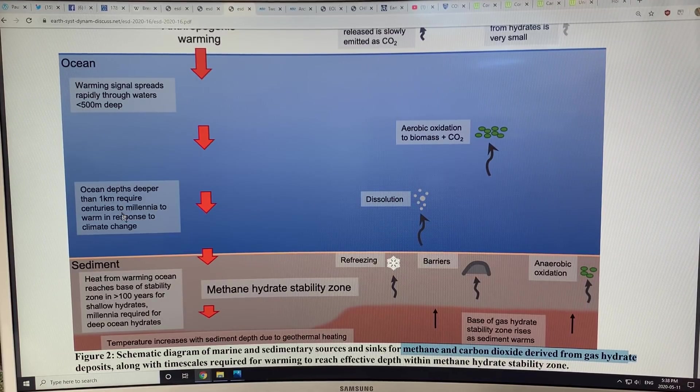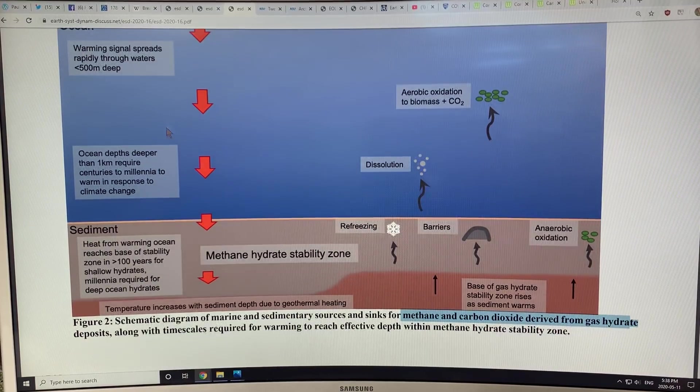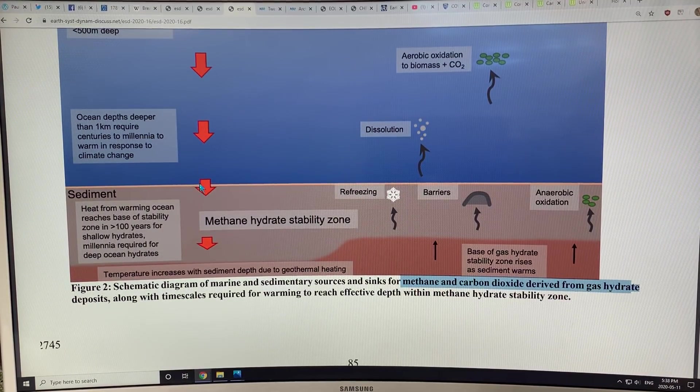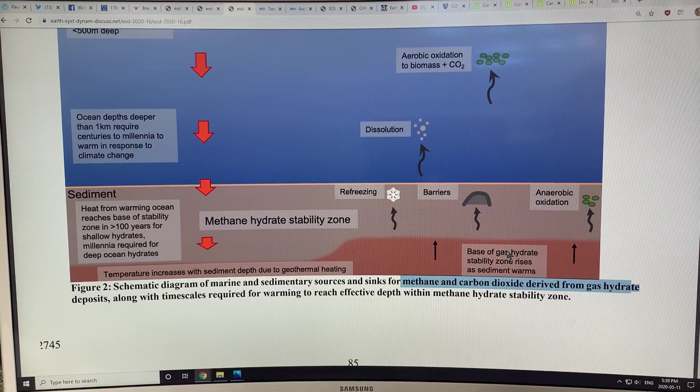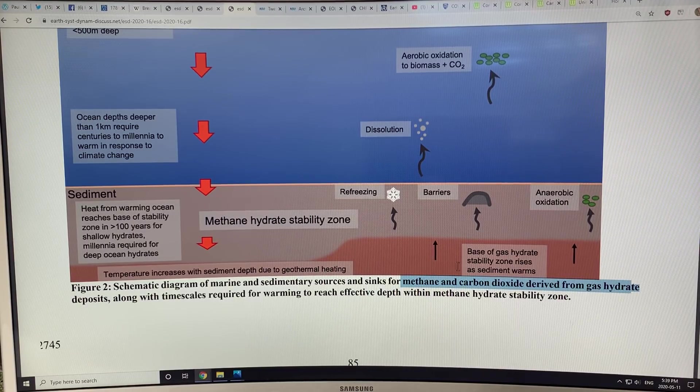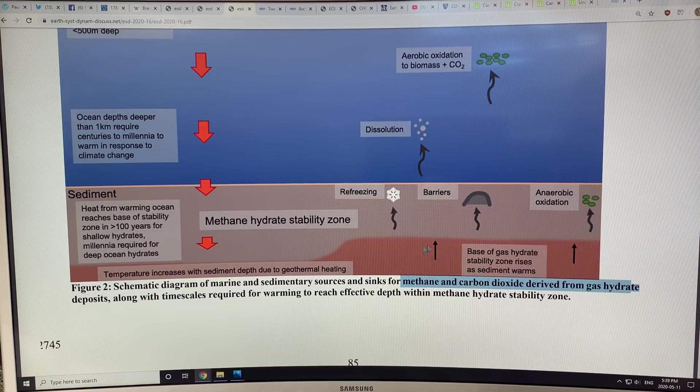Ocean depths deeper than one kilometer can require centuries to millennia to warm in response to climate change, and the heat can go down into the sediments. The clathrates can't be too far down in the sediments because we get heating from the earth's core going outward. As you go down deeper and deeper into the earth, the temperature warms up. So there's a zone here where these gas hydrates can be stable. As the heat penetrates down over time, it can thaw these hydrates and they can come out.